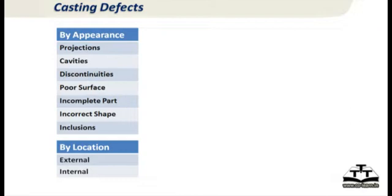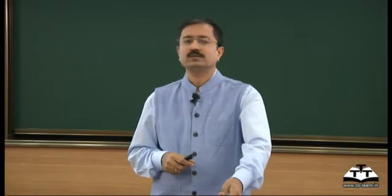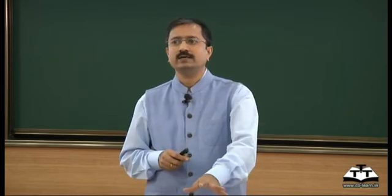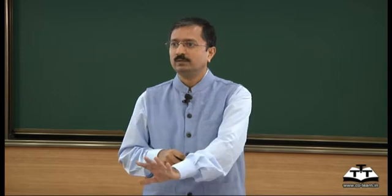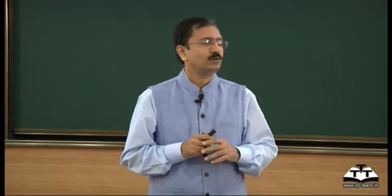So how do we analyze defects? Look at them like Sherlock Holmes. First, look at appearance. Is it a projection — an unwanted bump on the part — or a depression or cavity, or a discontinuity like a crack, or a poor surface appearance, or an incomplete part, or incorrect shape, or inclusions that should not be there? These are the seven major classifications of defects, following AFS and British standards with slight modifications. This gives you the first cut of how to look at a defect in terms of its appearance.